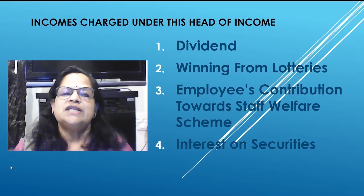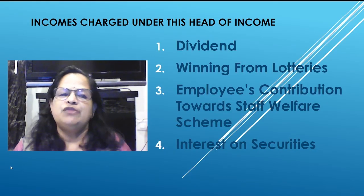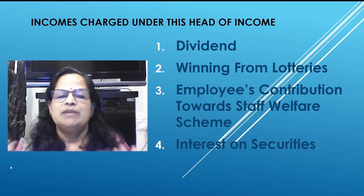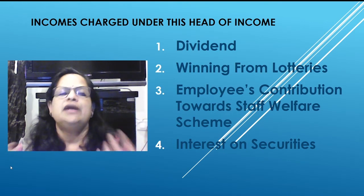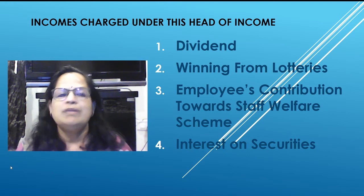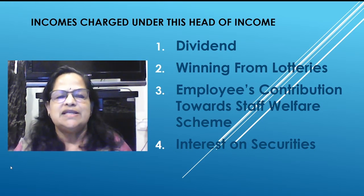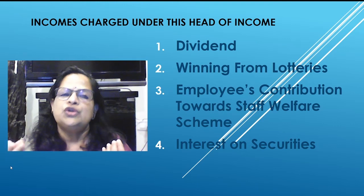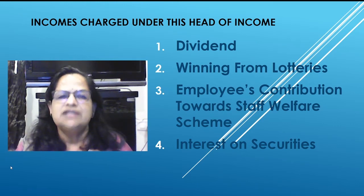Incomes charged under this head: if it is not possible to charge an item under any other head — salary, house property, business or profession, or capital gain — it will come under income from other sources. Items taxed here include: one, dividend; and two, winnings from lotteries.